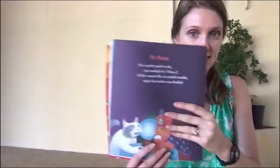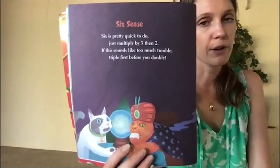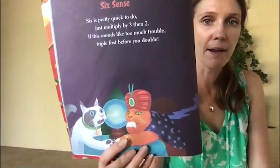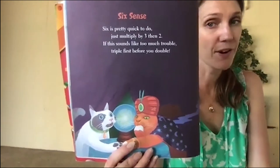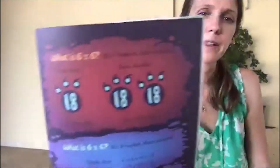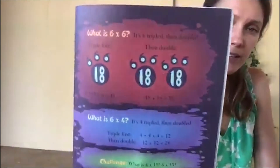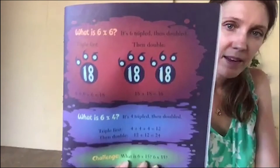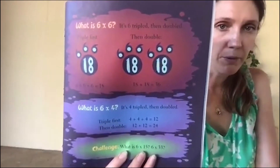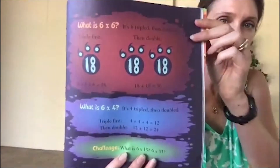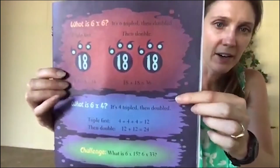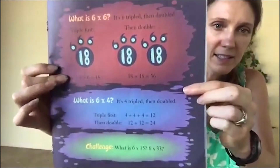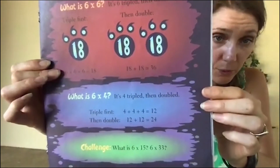Six cents — 'Six is pretty quick to do, just multiply by three then two. If this sounds like too much trouble, triple first before you double.' That sounds tricky — what does it really mean? So what is 6 times 6? It's six tripled then doubled — you triple first.